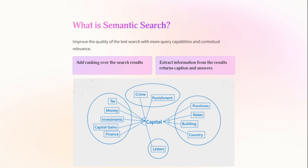Consider the example below. We have the word 'capital,' and capital has different meanings. For example, it might be related to money or investments, or it can relate to crime or punishment, or it can refer to the capital of a state or country, or it can mean capital letters. In general, a full text search is just going to match the word 'capital' and return results — it doesn't understand what exactly you are looking for.